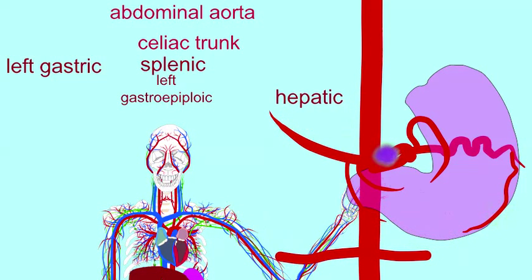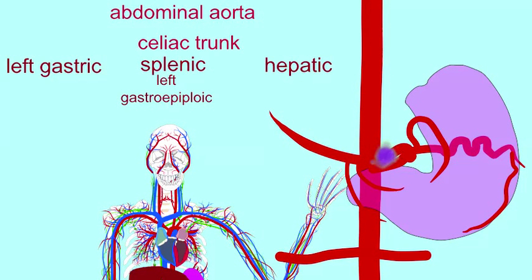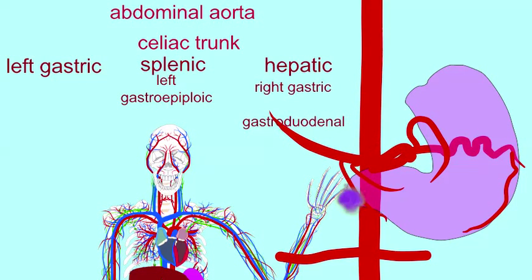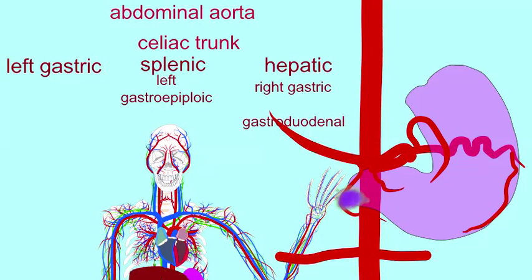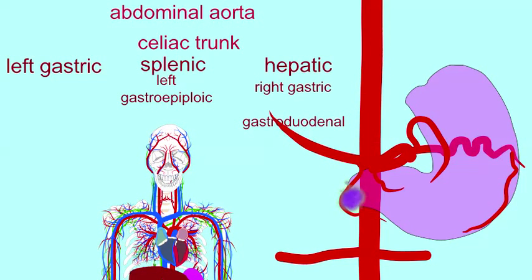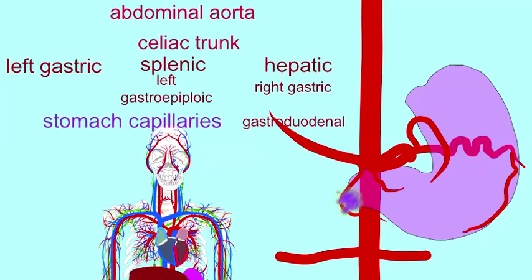I could also send blood through the hepatic artery, and before it makes its way to the liver, it forms two small arteries — the right gastric artery and the gastroduodenal artery — both of which can serve the pyloric region of the stomach. So the celiac trunk forms these three branches, and each can send oxygenated blood to different regions of the stomach.